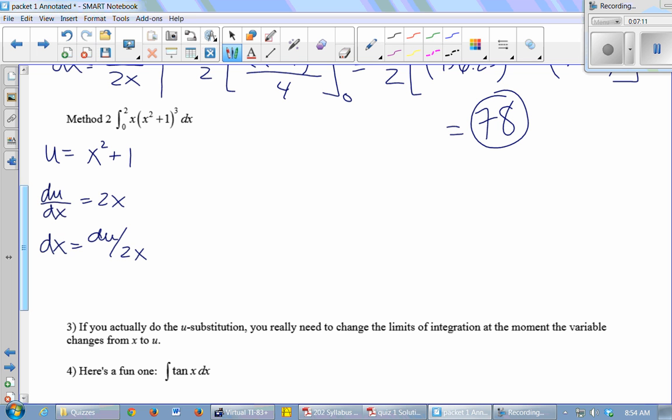So I'm going to change the bounds. So what is u(0)? 1. You just plug a 0 in here, put 0 in for x, and you get 1. And u(2), 5. So now I know what the correct bounds should be.